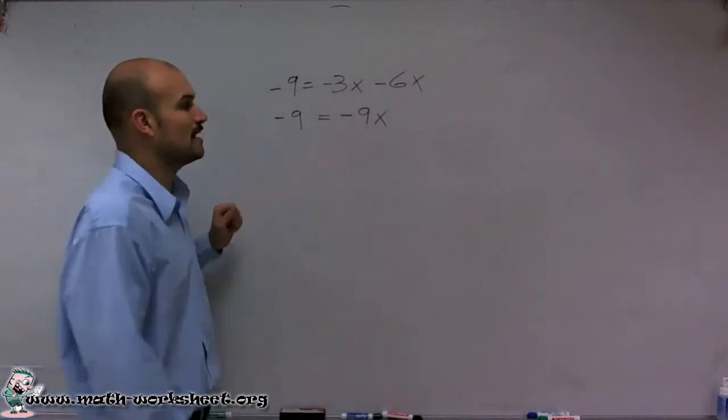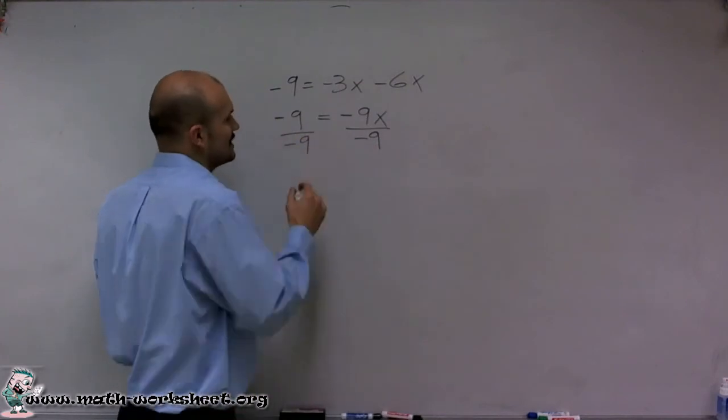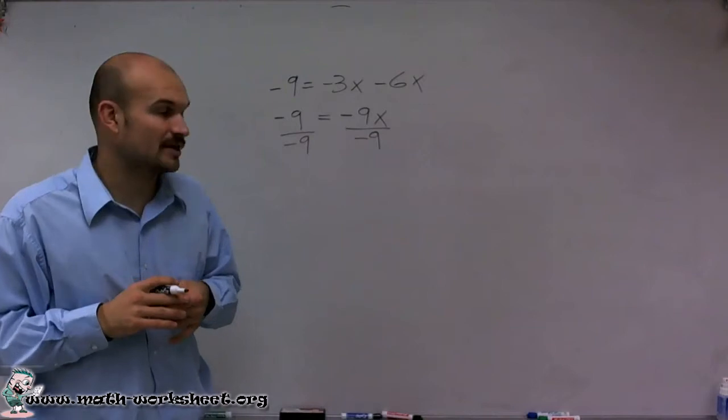Since it's being multiplied by negative 9, I need to divide by negative 9 on both sides of the equation, called the division property of equality.